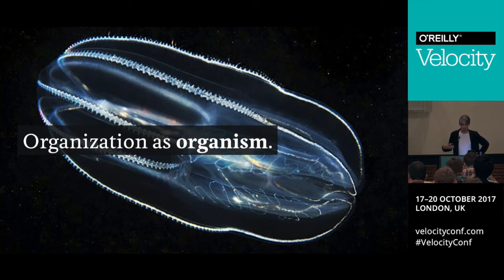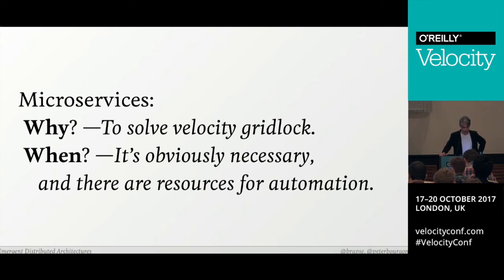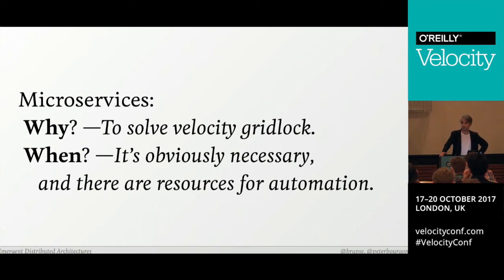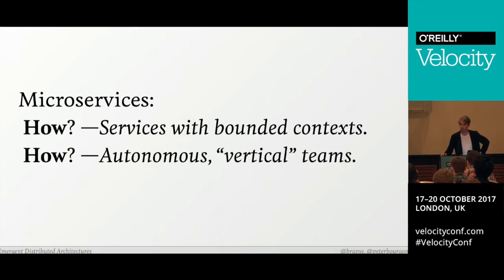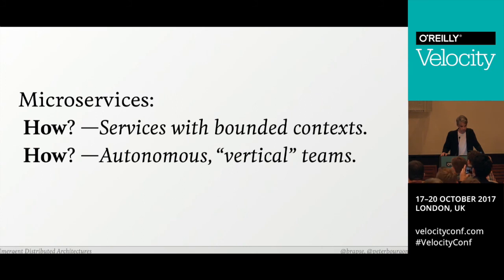We identified two architectures that naturally emerge in this environment. First, the microservices architecture — its ideal circumstances and ideal form. Why do microservices? To solve velocity gridlock. When should you transition to it? When it's obviously necessary and there are resources available for automation. How should you do microservices? Implement services with well-defined bounded contexts, and build autonomous teams arranged in a so-called product vertical orientation.